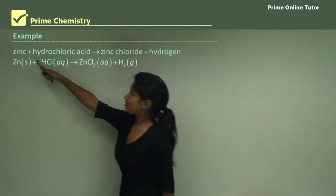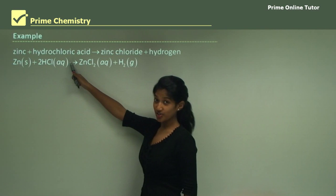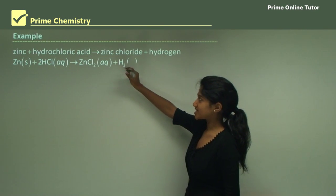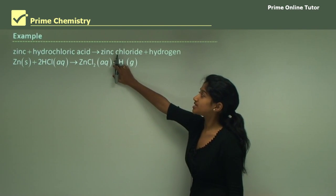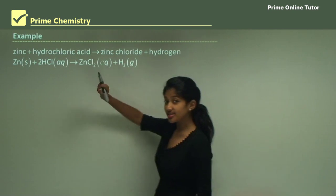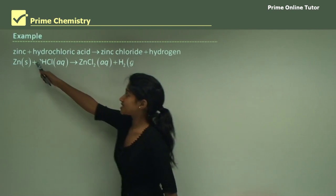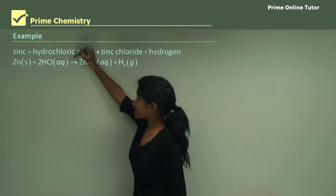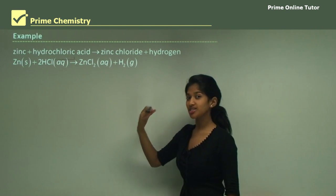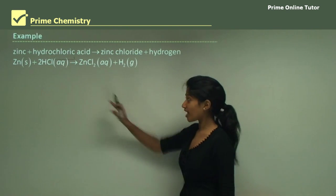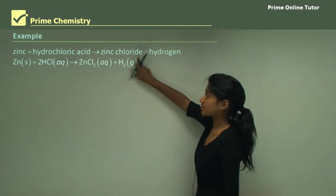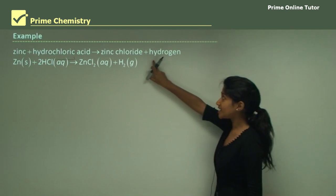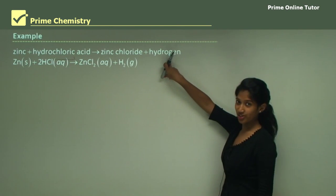For example, we'll see zinc reacting with hydrochloric acid. When they react with hydrochloric acid, they form zinc chloride. Zinc, the metal, reacts with the Cl part of the hydrochloric acid — that's where the chloride comes from. So the products are zinc chloride and hydrogen gas.